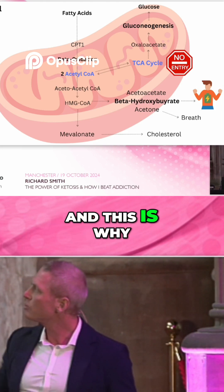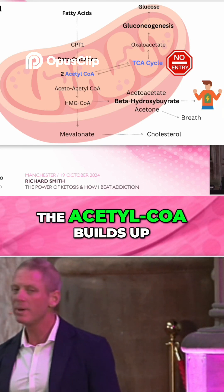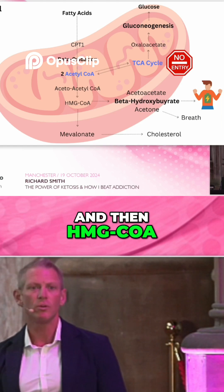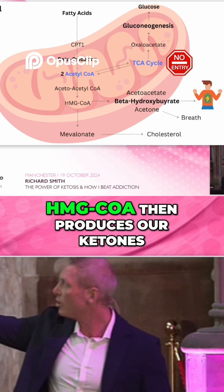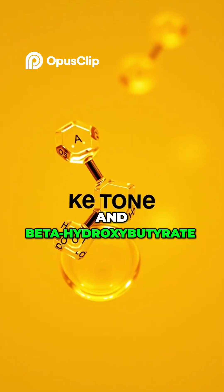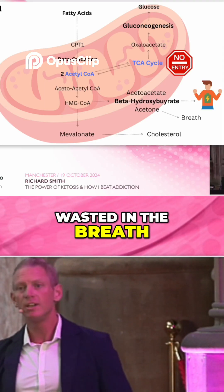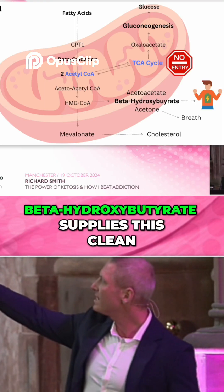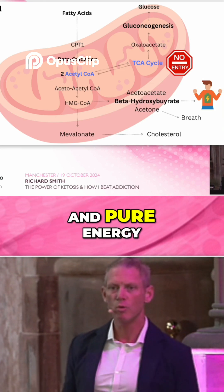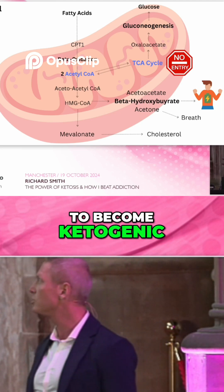This leads to a build-up — which is why acetyl-CoA is highlighted in a different color. The acetyl-CoA builds up and then enters acetoacetyl-CoA and then HMG-CoA. Beta-hydroxybutyrate supplies this clean and pure energy, and this is the goal of anybody looking to become ketogenic.